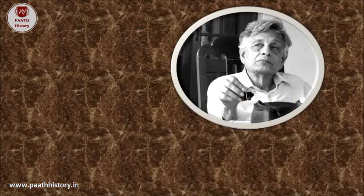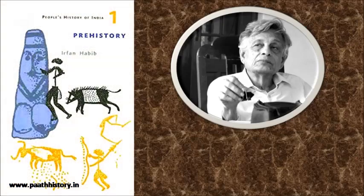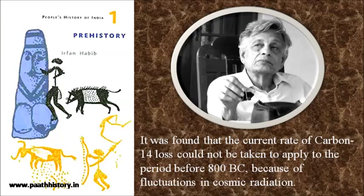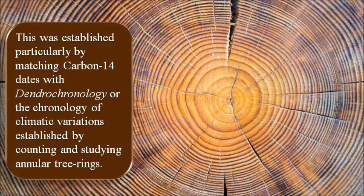Irfan Habib pointed out in his book 'Prehistory' that it was found that the current rate of carbon-14 loss could not be taken to apply to the period before 800 BCE because of fluctuations in cosmic radiation. This was established particularly by matching carbon-14 dates with dendrochronology — the chronology of climatic variations established by counting and studying annular tree rings.